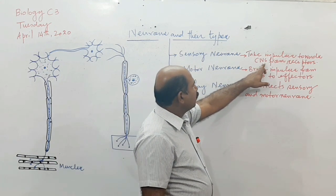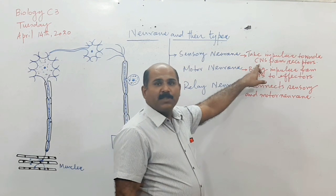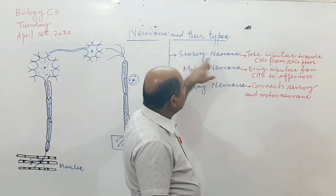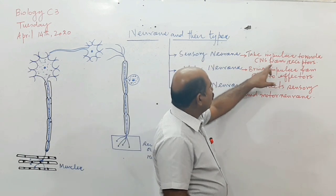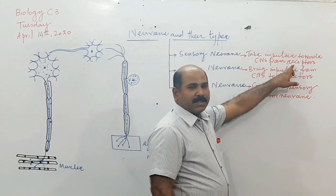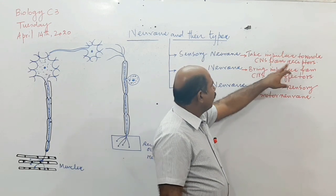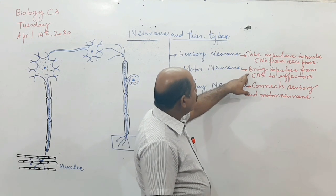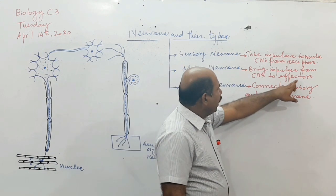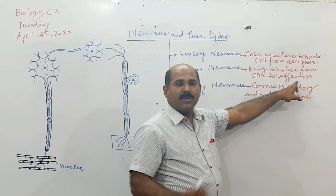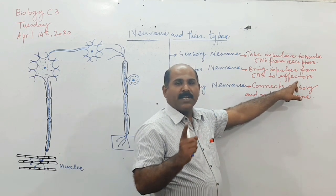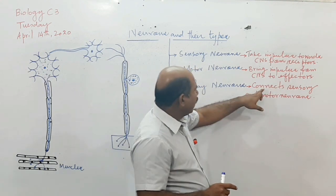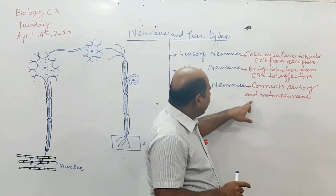As we discussed yesterday, CNS means brain and spinal cord. Sensory neurons take impulses towards the CNS from receptors. Motor neurons bring impulses from the CNS to effectors — effectors are of two types: muscles and glands. Relay neurons connect the sensory and motor neurons.